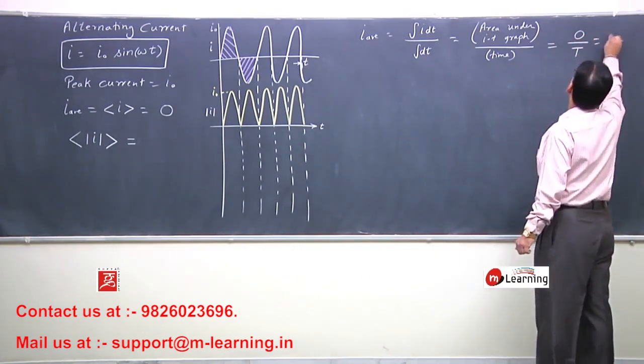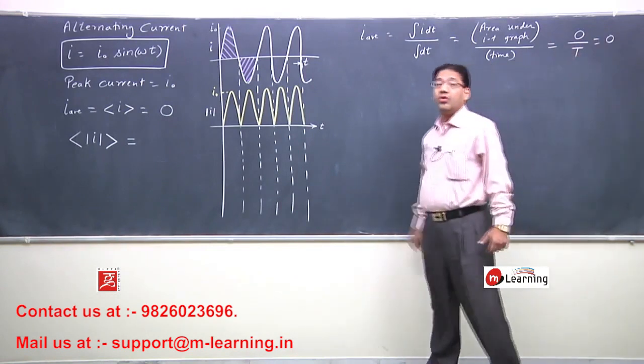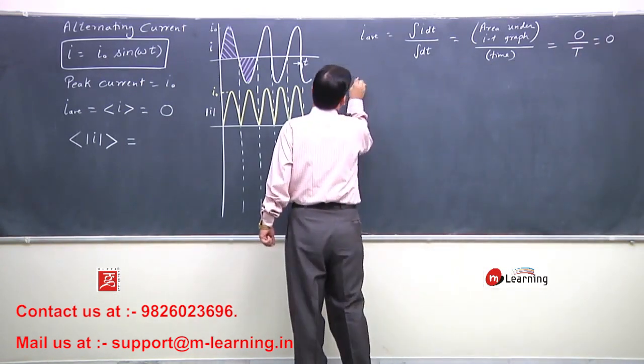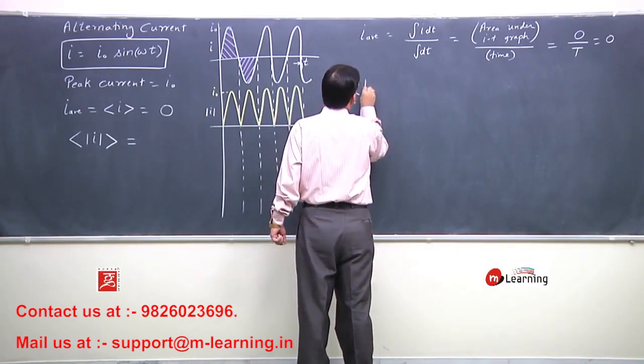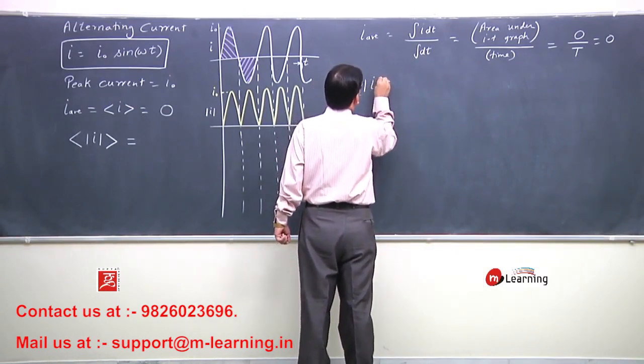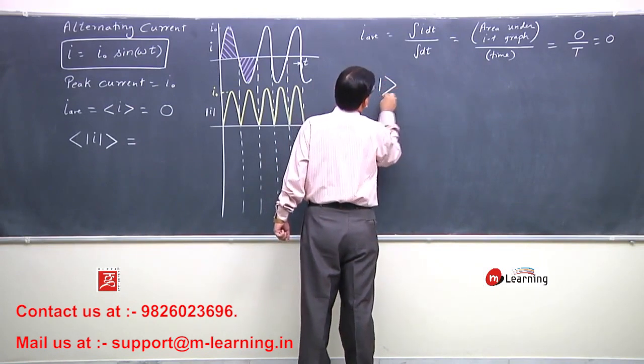Therefore i average we wrote as 0. Now what we are asked is that is mean of mod of i, magnitude of i, its mean is asked.